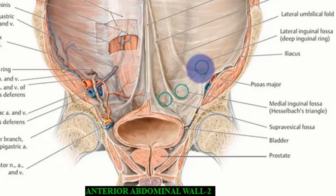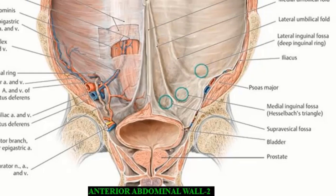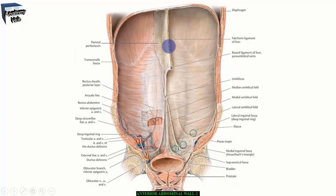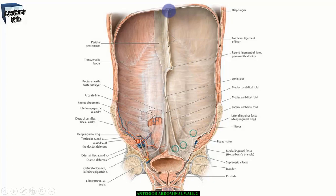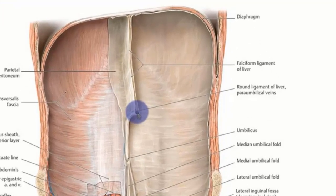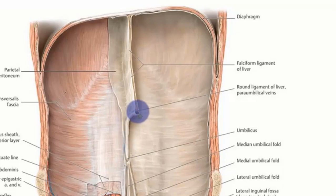The falciform ligament is a double-layered peritoneal reflection between the liver and the anterior abdominal wall, extending superiorly from the umbilicus to the roof of the abdominal cavity. It encloses the round ligament, which is the remnant of the umbilical vein and para-umbilical veins.